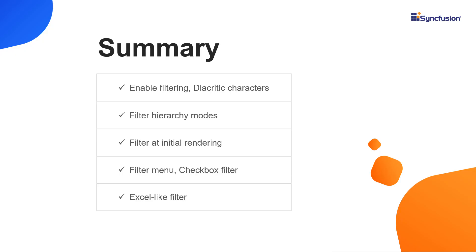Finally, let me summarize the main points. I have explained the steps to enable filtering, how to consider diacritic characters while filtering, how to use filter hierarchy modes and filter operators, and how to filter at initial rendering. I have also explained advanced filter types like the menu filter, checkbox filter, and Excel-like filter. You can download this featured sample from the link provided in the description below. If you found this video useful, click the like button and subscribe to our channel to get notifications for our new videos. Thanks for watching.